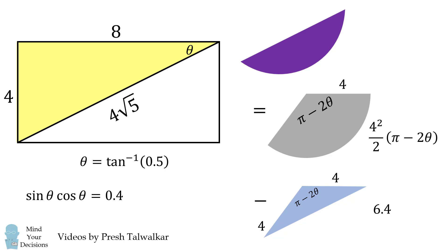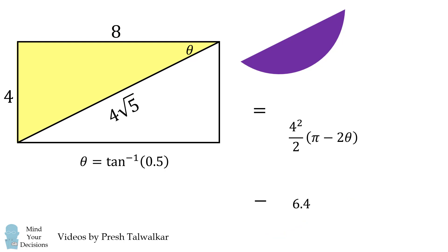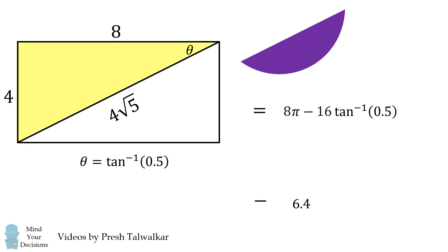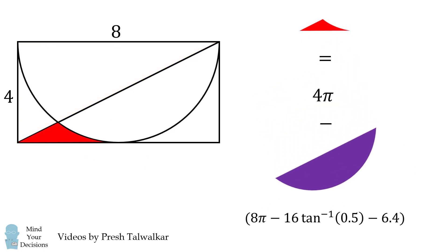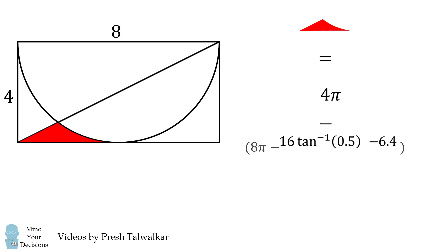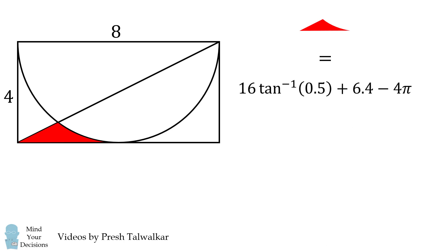We can then use theta equals the inverse tangent of 0.5 to solve for the area of this circular sector. We substitute that in for 2θ, simplify this formula, and it all ends up being the following. So now we take 4π and subtract the area of this circular segment, and that will be the area of this red shape. After doing some algebra and simplifying, we get the answer of 16 multiplied by the inverse tangent of 0.5 plus 6.4 minus 4π, and that's approximately equal to 1.252.